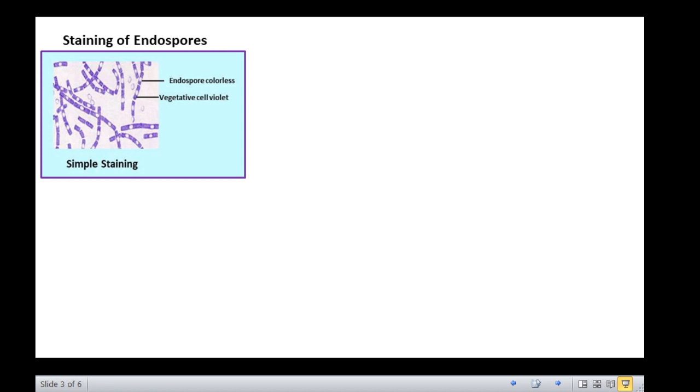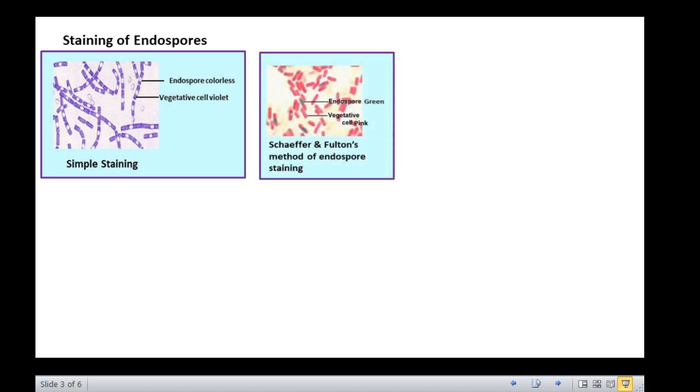Schaffer and Fulton developed a method to stain endospores in which heat is used to drive the primary stain, malachite green, into the spores. After cooling, the slide is washed with water. This decolorizes the vegetative cell, which is then counter-stained with safranin. This staining procedure results in green endospores and pink vegetative cells.